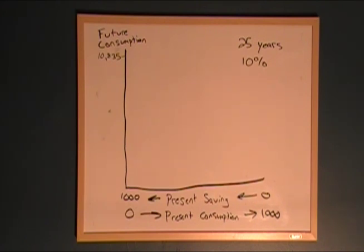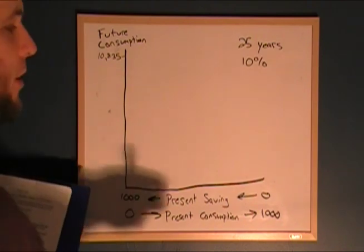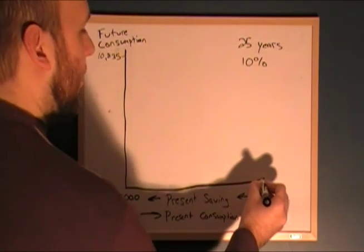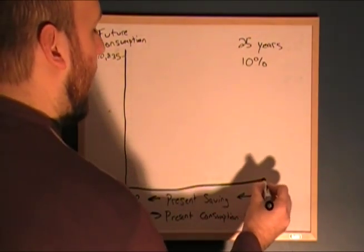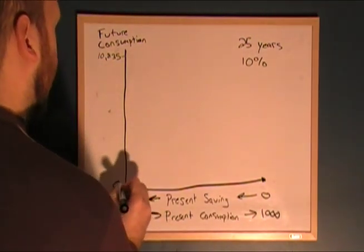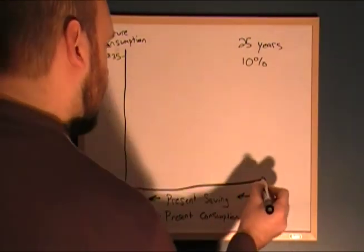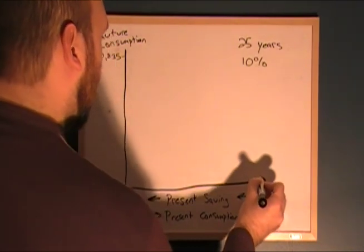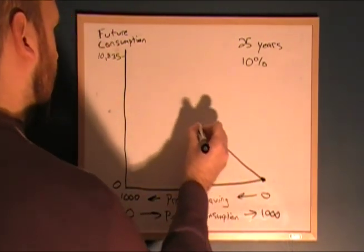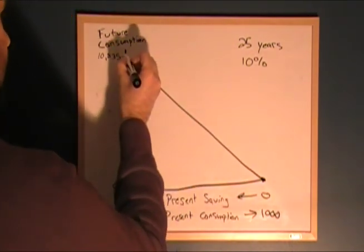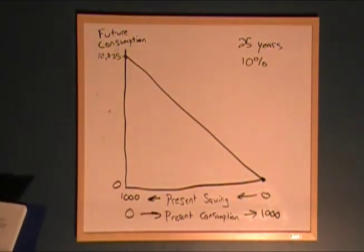Now if I saved $0 and consumed it all in the present, I would be saving nothing for 25 years, and nothing compounded is still nothing. So we know our two endpoints, and we'll go ahead and connect them with a line.